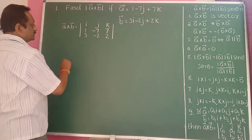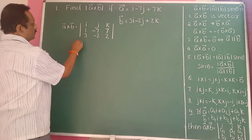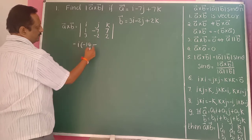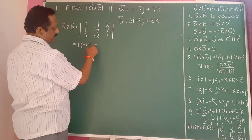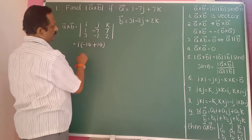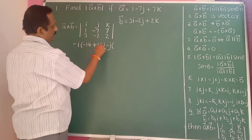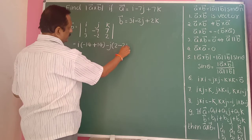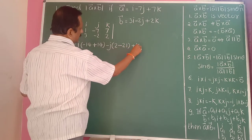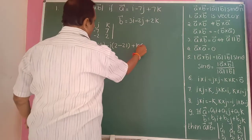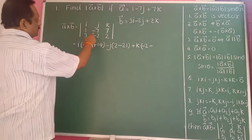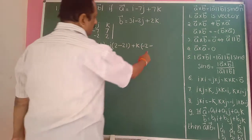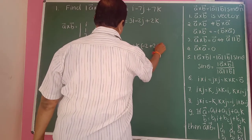Now expanding the determinant: i into (7×2 minus 14) — that is 14 minus 14, which gives 0. Then minus j into (1×2 minus 7×3) — that is 2 minus 21. Then plus k into (1×minus2 minus minus7×3) — that is minus 2 minus minus 21, giving plus 21.